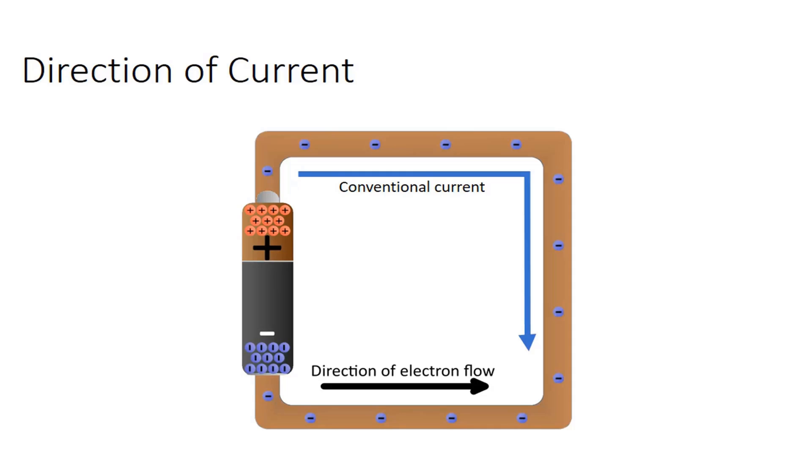electrons move from negative to positive, so the current direction is found to move from negative to positive. The change in direction notation does not affect any formulas, so there is no problem in calculations.